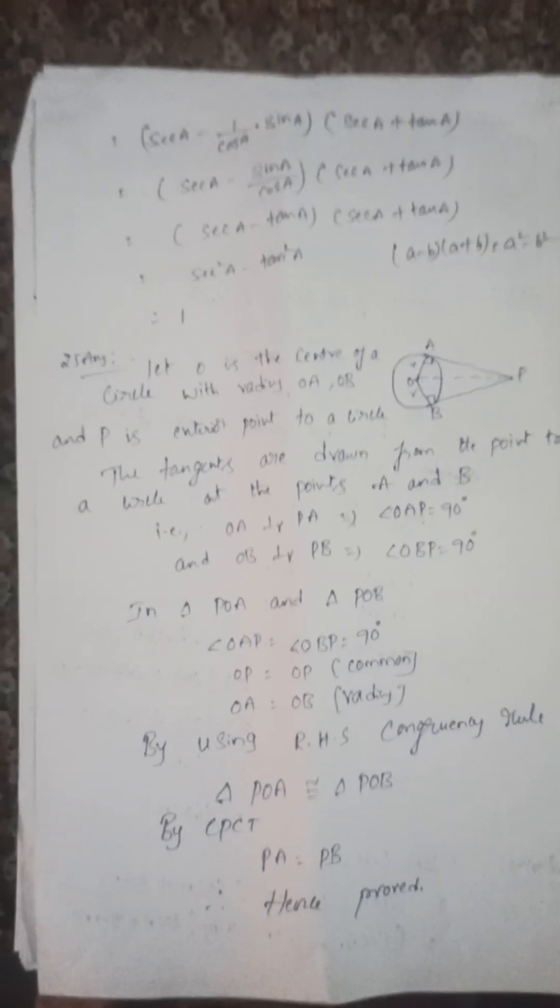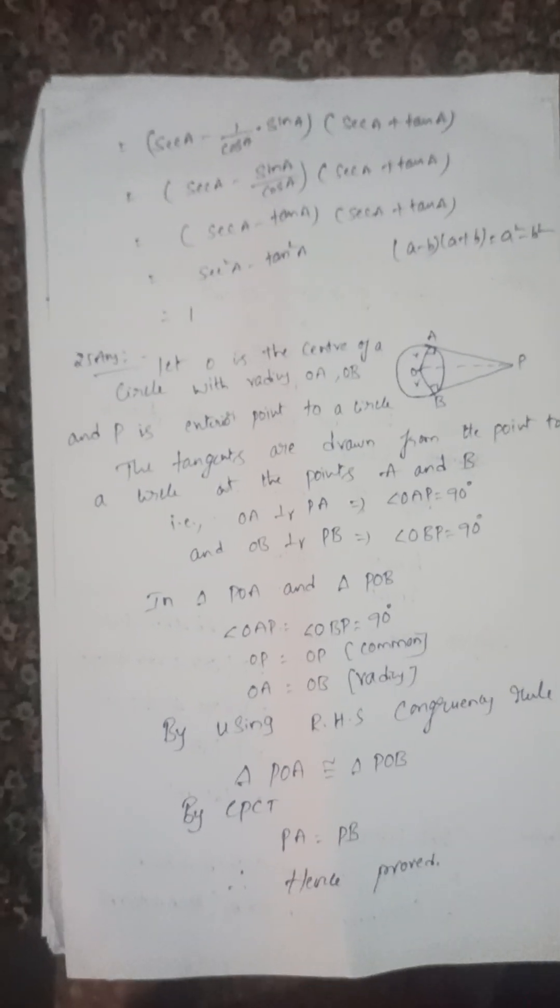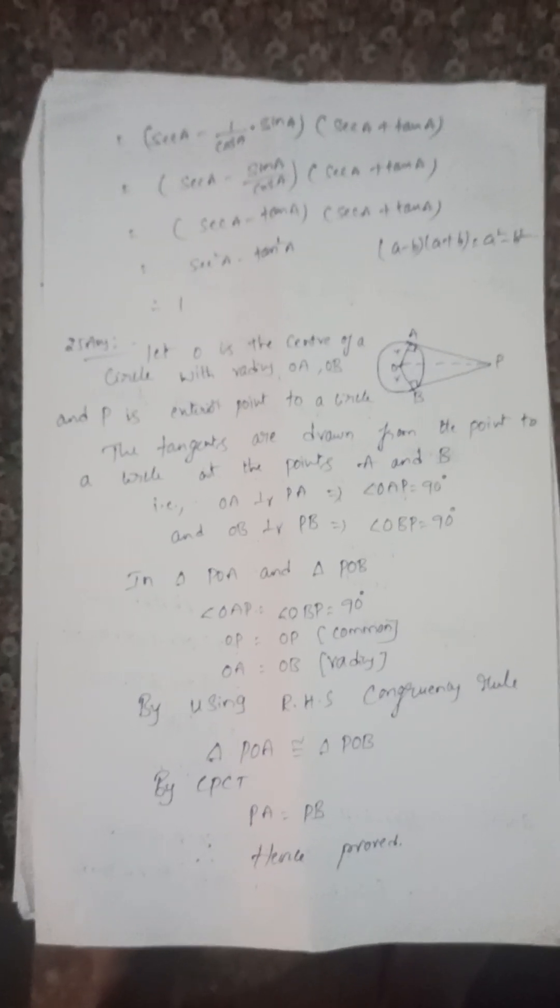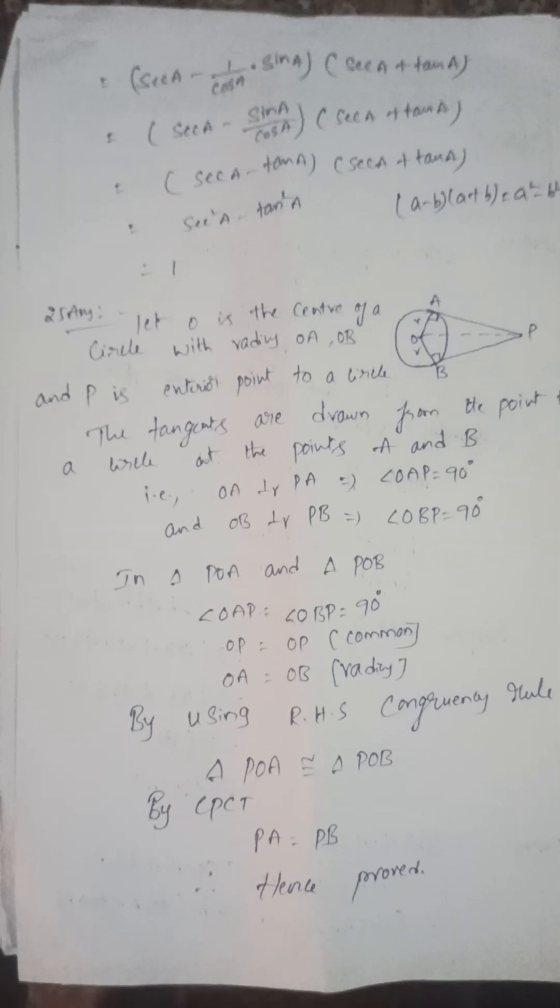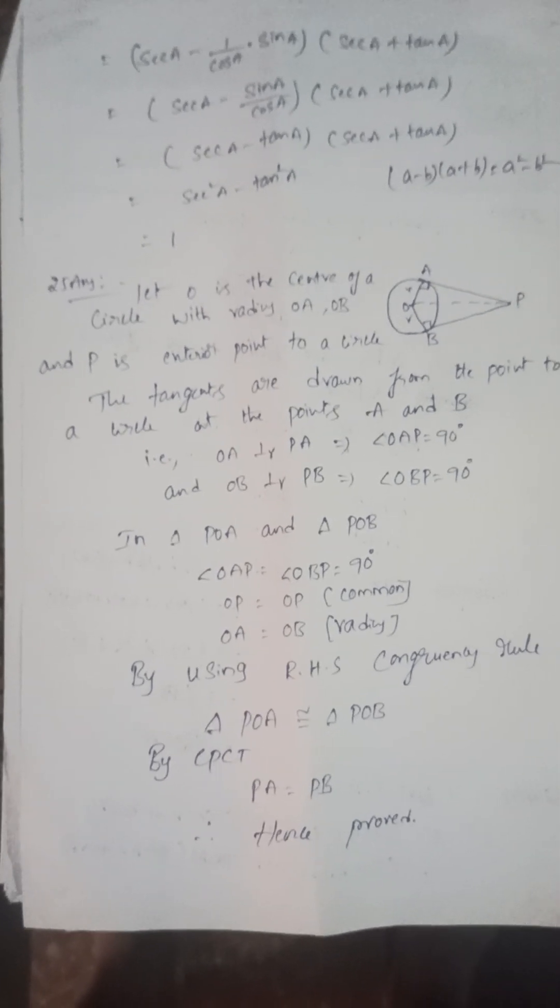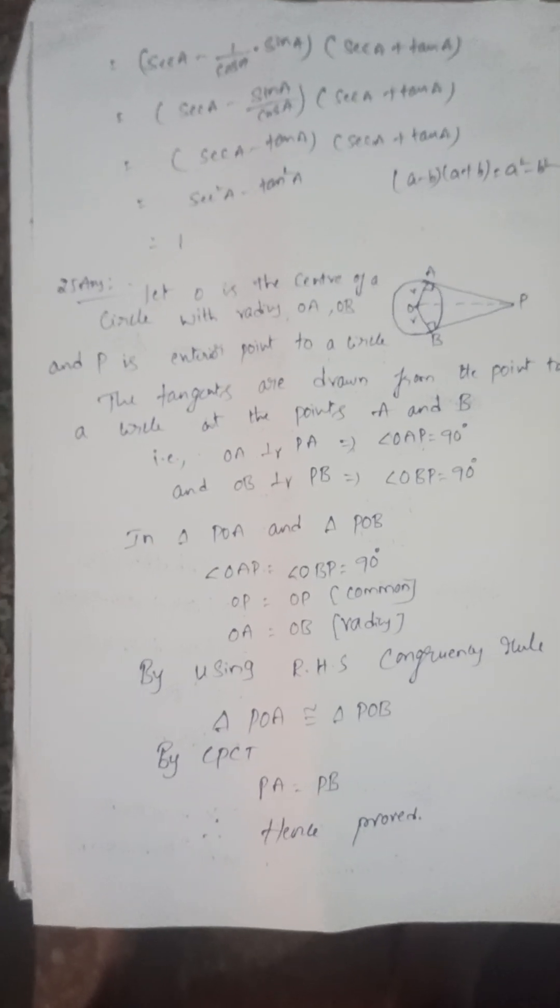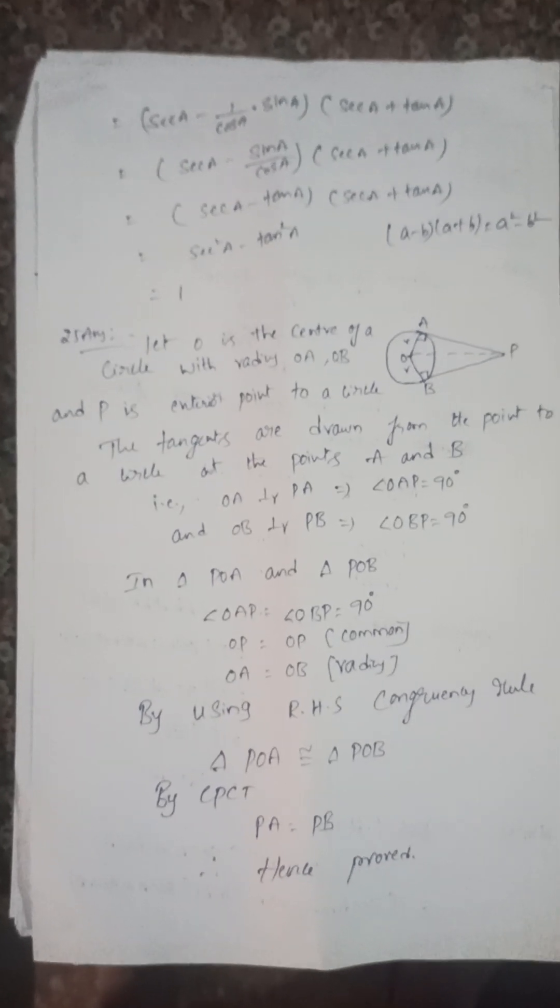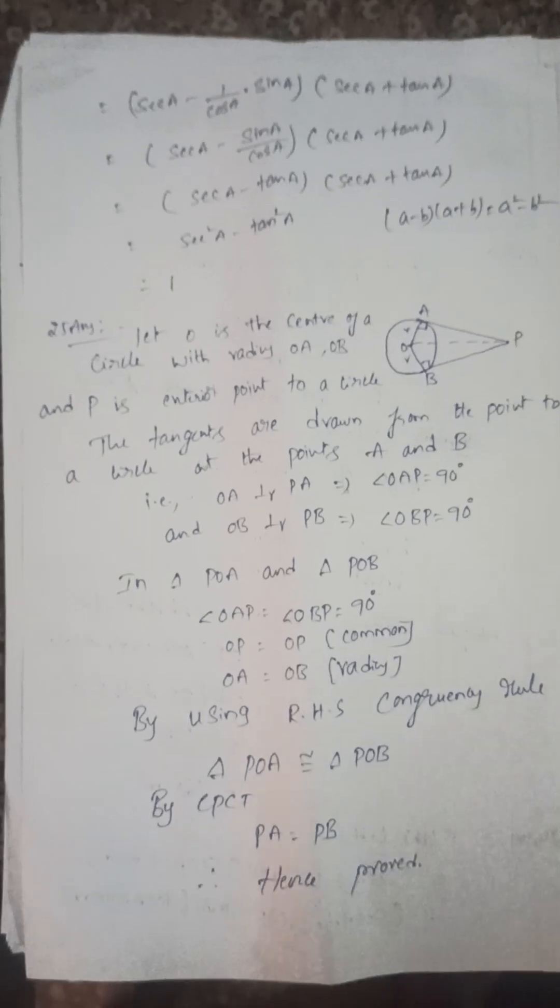Next, prove that tangents drawn from an external point to a circle are equal. You can find this by using Pythagoras theorem. By using Pythagoras theorem or the RHS congruent rule, the two triangles are congruent, then corresponding sides and corresponding angles are equal. That is, PA = PB.